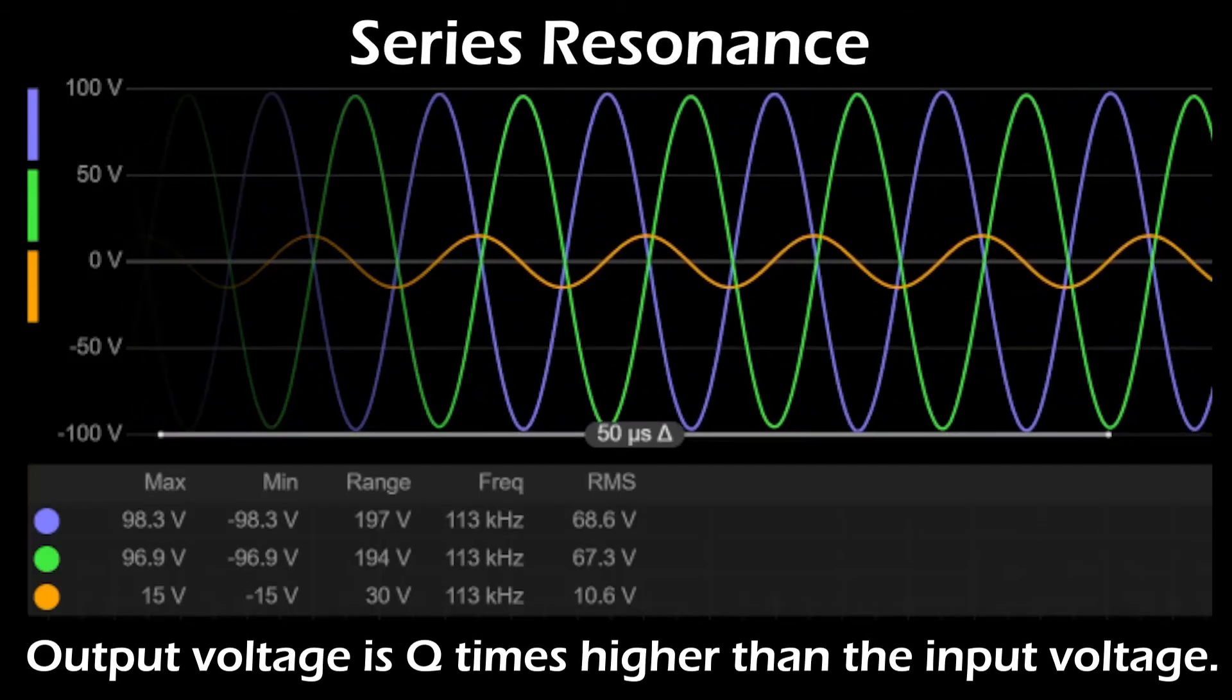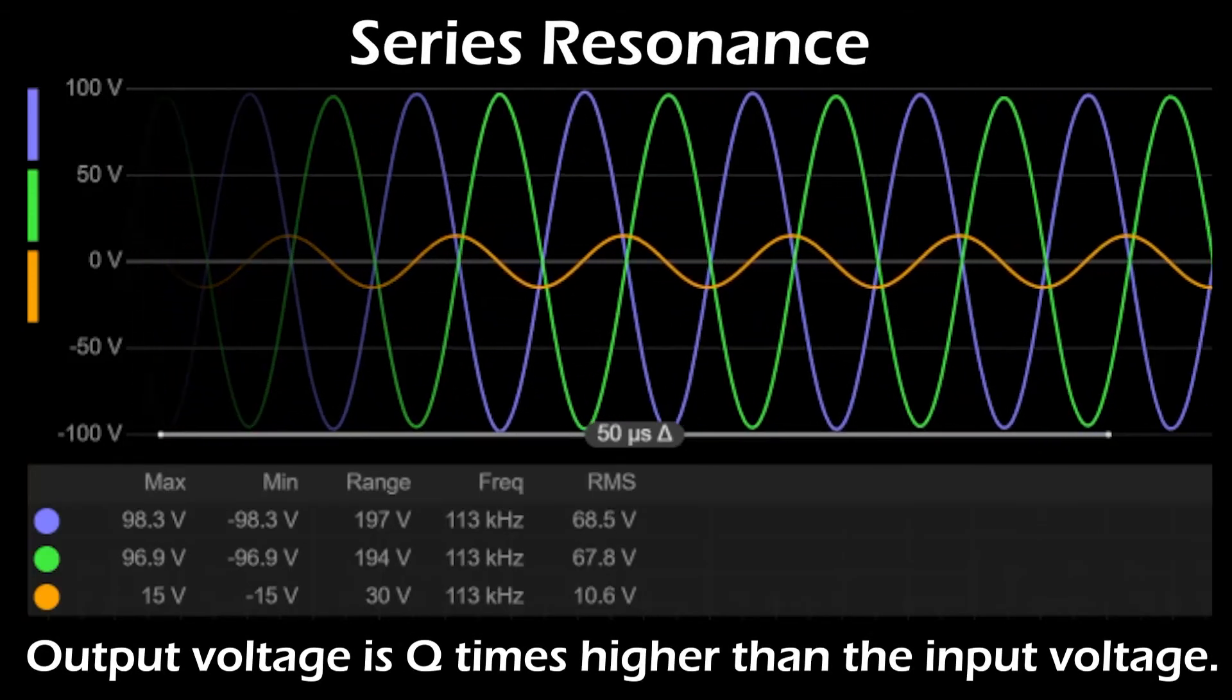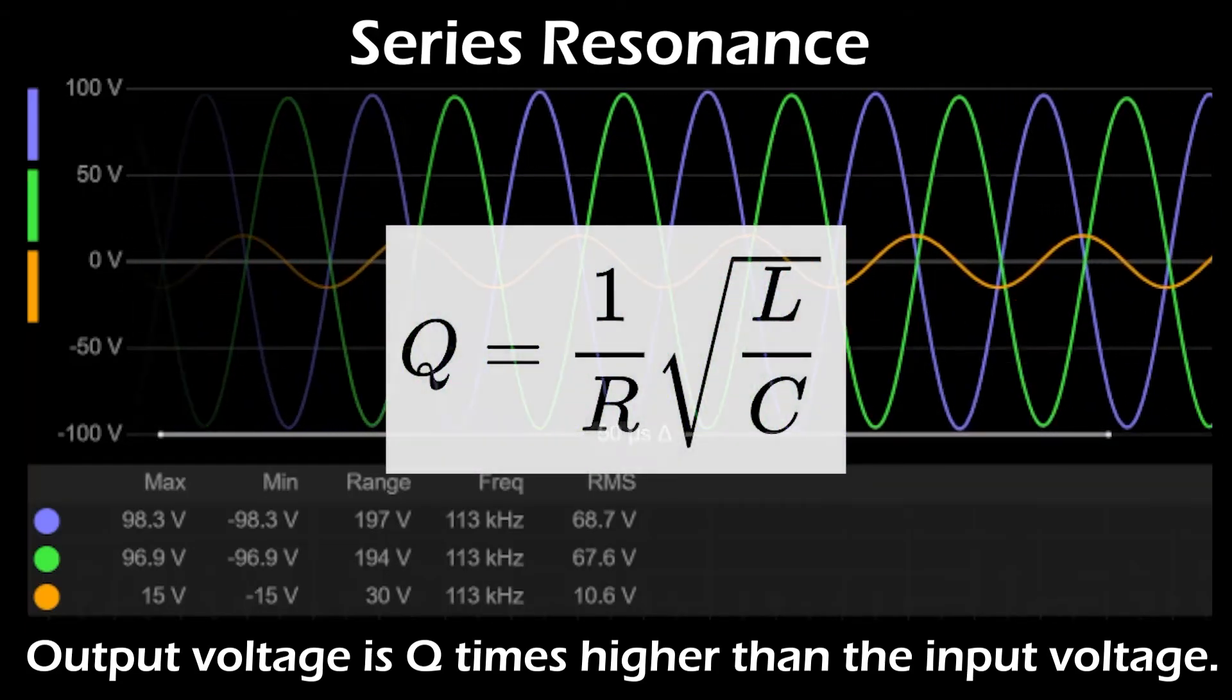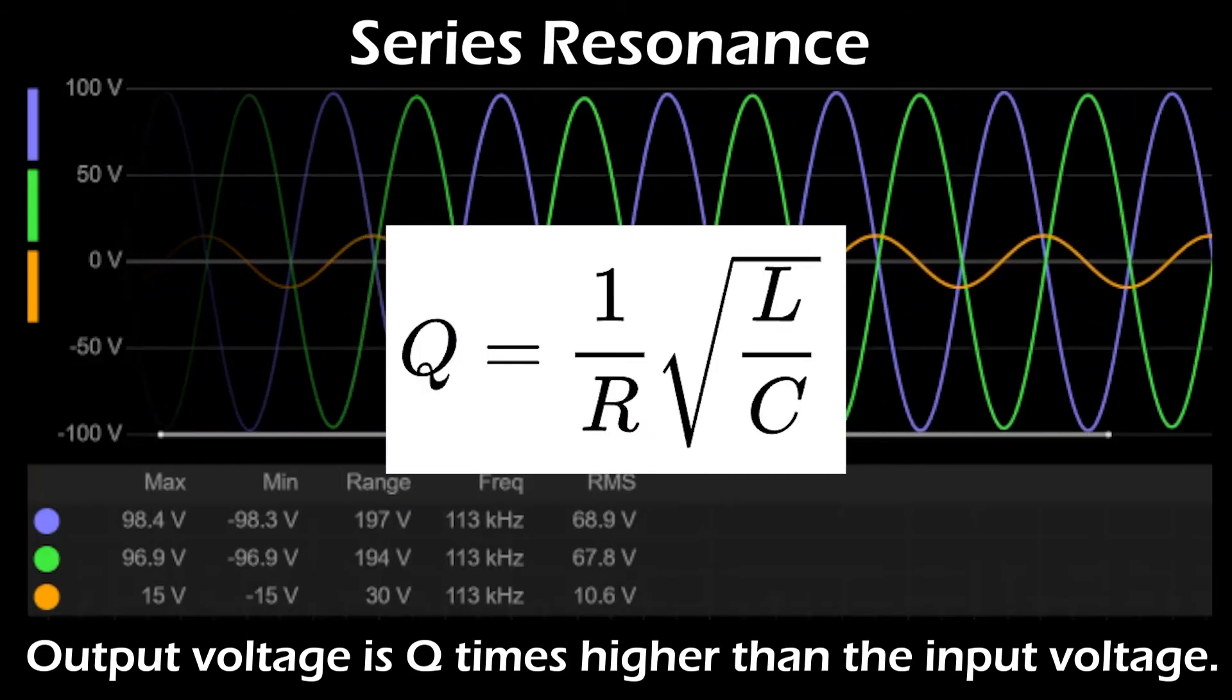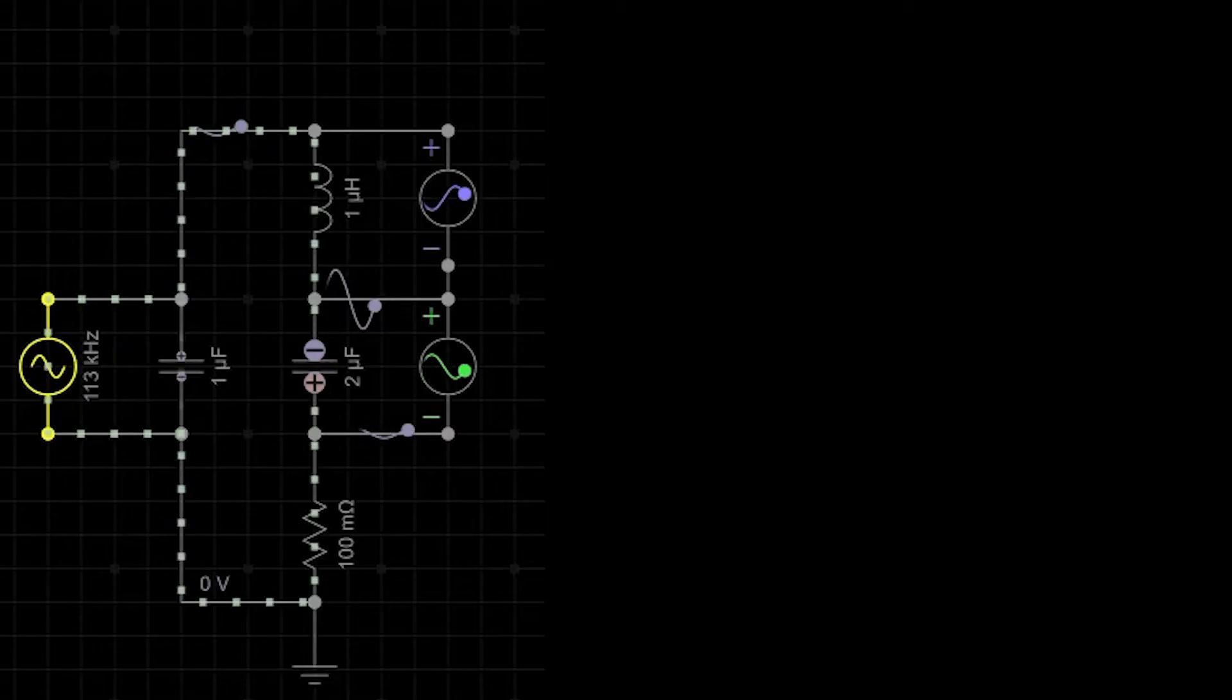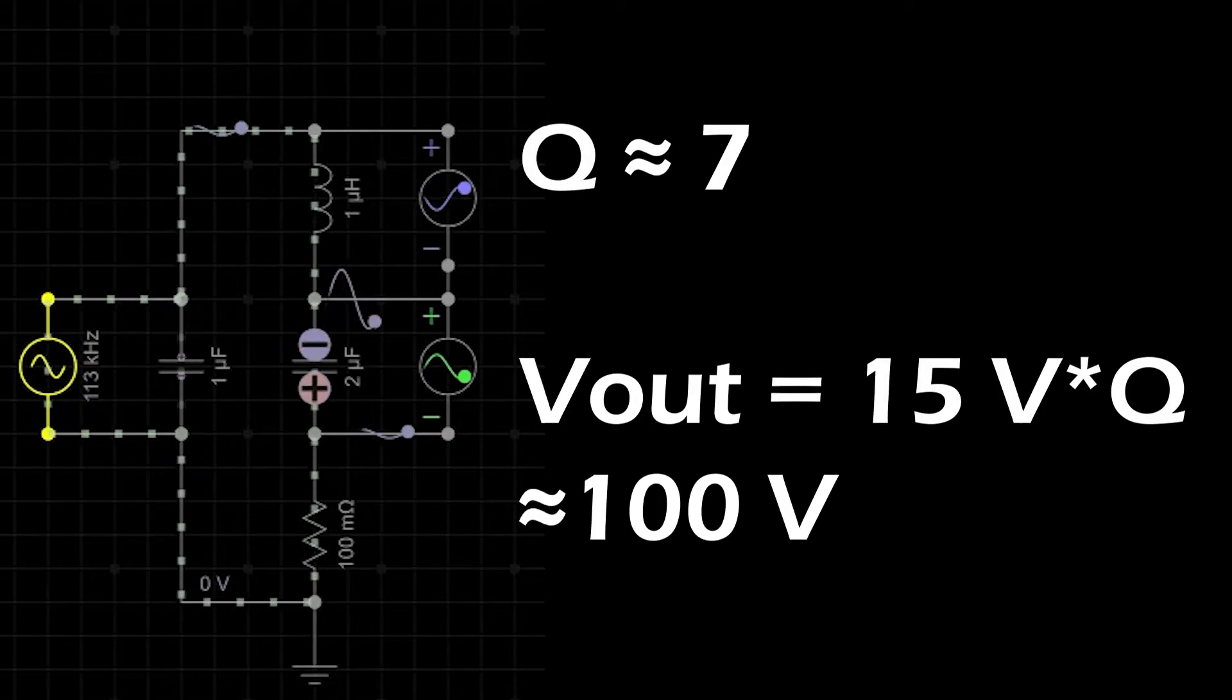In series resonance, the voltage at the components are much higher than the input. And if you want to calculate it, it can be done using the Q-factor. Which basically shows how many times the voltage at the components is higher than the input voltage. In example, I gave you Q-factor equals approximately 7. So if we multiply 15 by Q, which is 7, it gives us approximately 100V at the output.